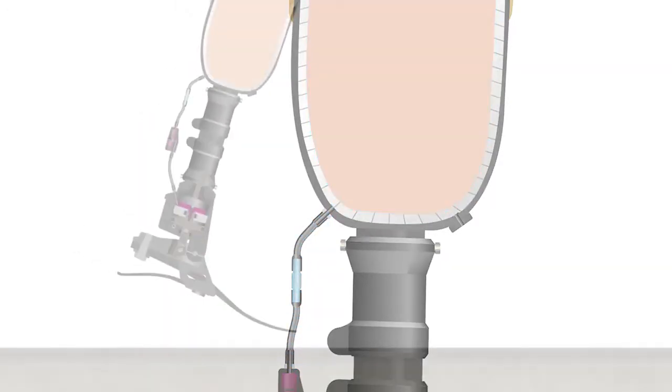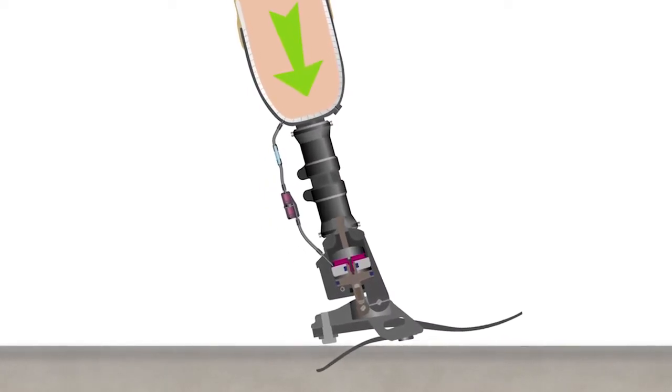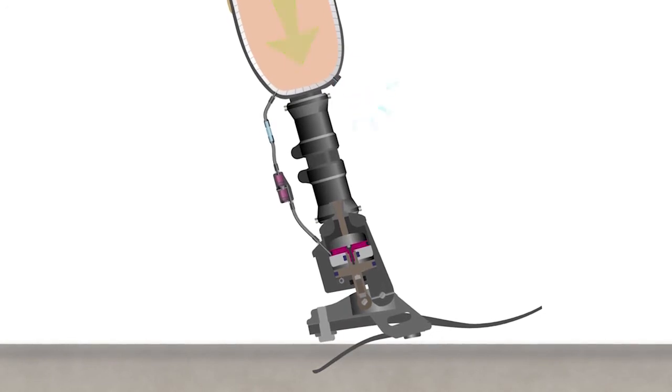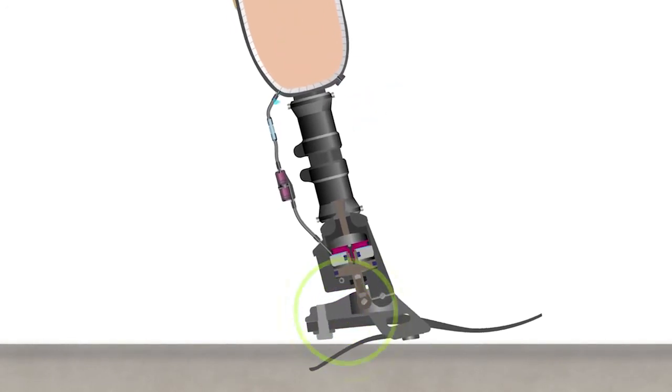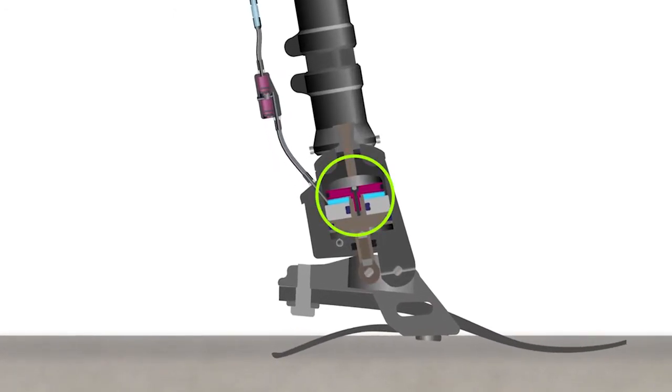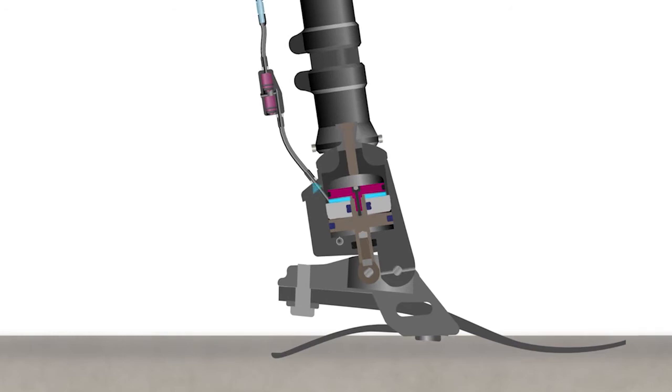With every step, the wearer presses their weight into the prosthesis, initially expelling air through a one-way valve. Simultaneously, the ankle plantar flexor is actively drawing air out of the socket. This air is held in the valve chamber and released into the atmosphere as the tibia progresses and the ankle dorsiflexes.